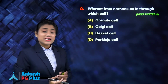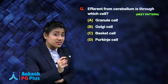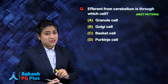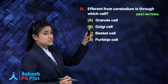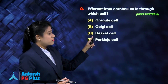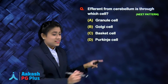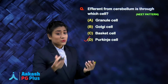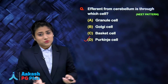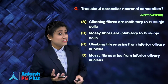Next question: the efferent from the cerebellum is through which cell? Granule cells — no. Golgi cells — no. Basket cells — no. The answer is Purkinje cells. Purkinje cells end on the deep nuclei and send the efferent output out of the cerebellum.